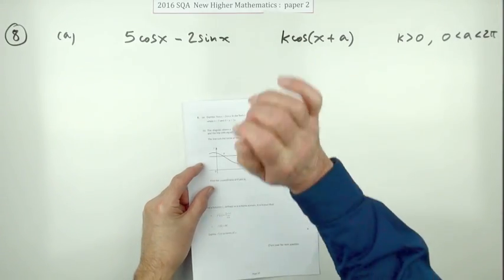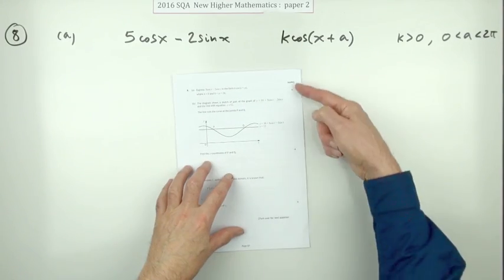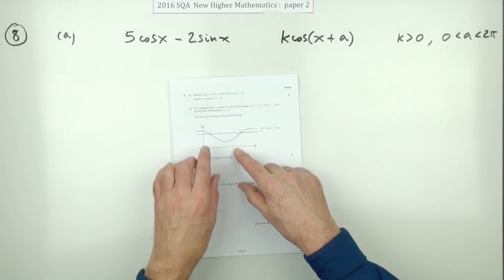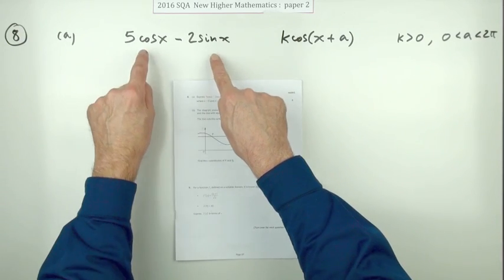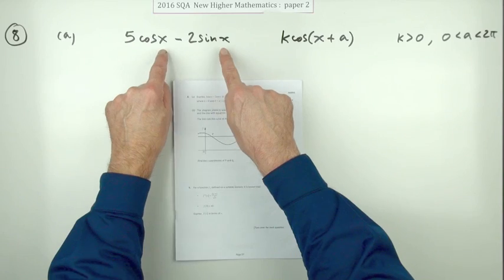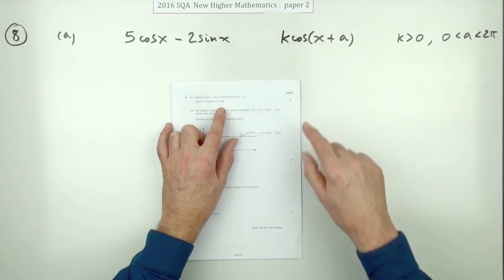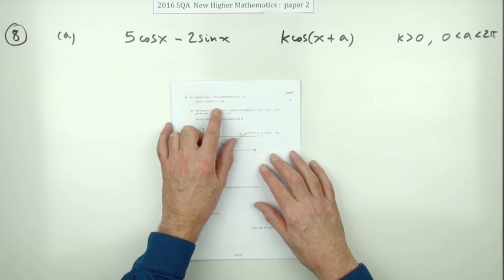Number 8 from paper 2 of the 2016 Higher Maths - eight marks. This is the wave equation question. First part for four: simply express this combination of sines and cosines (notice same angle, so it's not a double angle question) in the form of a single trig function, in this case a cosine.